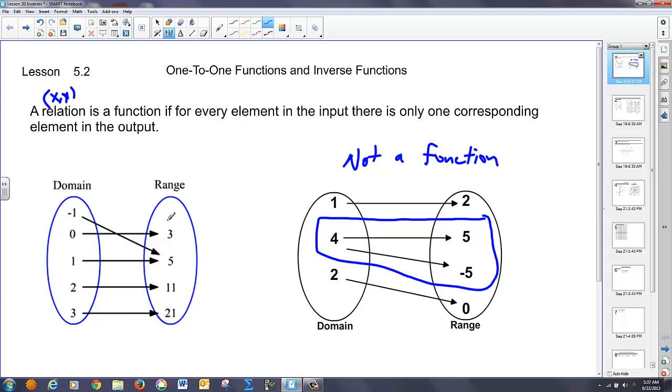But in this case, even though two different x's go to the same y, that's alright, because an element in the input can't have two output values. So this is a function.